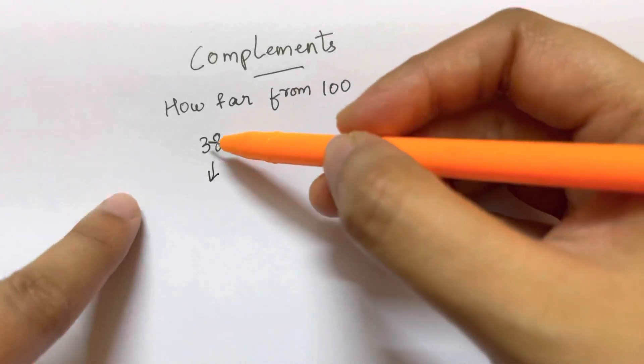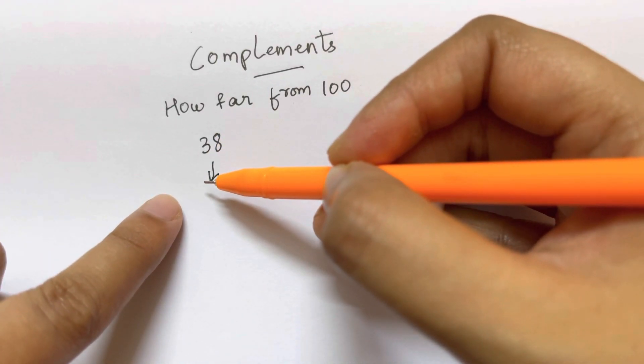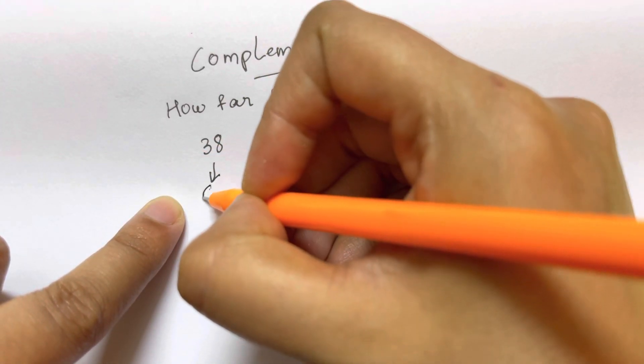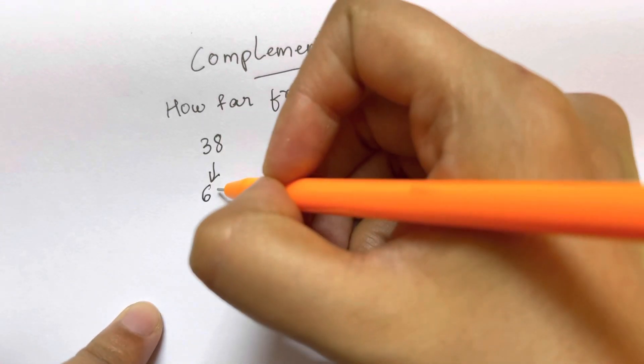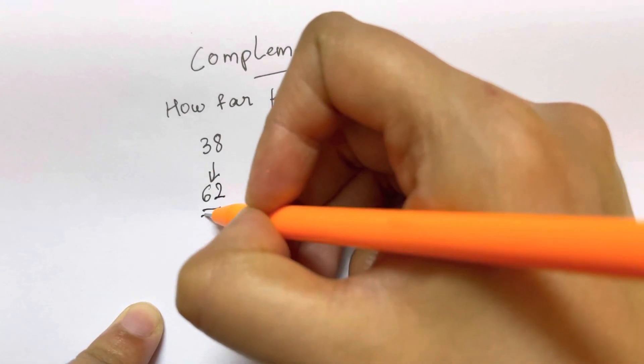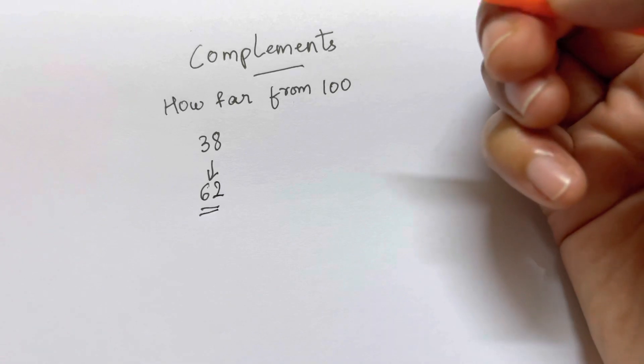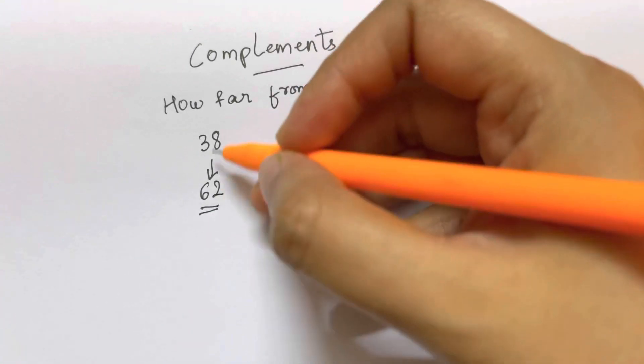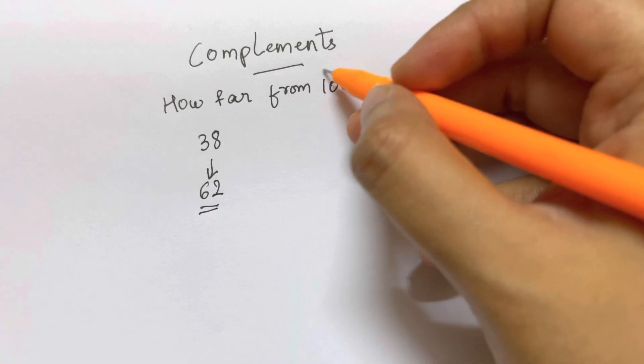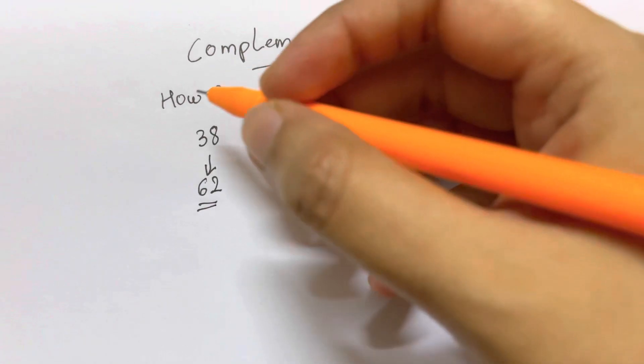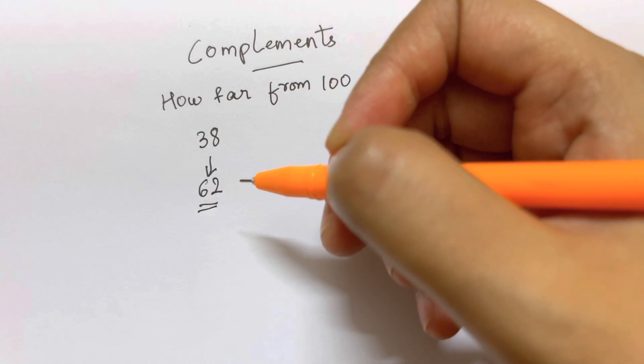So all you need to know is, how far is 3 from 9? So that's 6. How far is 8 from 10? That's 2. So 62 is your complement. Right? They should add up and give you 100. This is your base 100. So this is how you find out complements of some number.